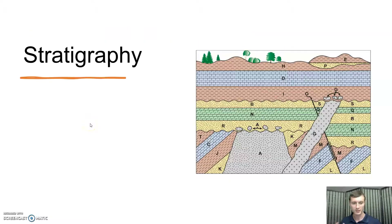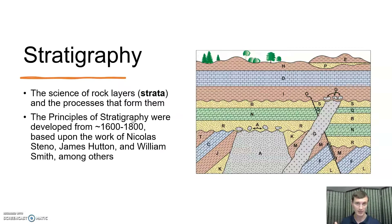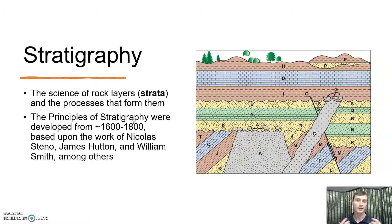So what is stratigraphy and why is it important? Stratigraphy is the science of taking rock layers — called strata — and putting them in order. It covers the rock layers themselves and also the processes that form those rock layers. The principles behind stratigraphy were developed by Nicholas Steno, James Hutton, William Smith, and others between about 1600 and 1800.